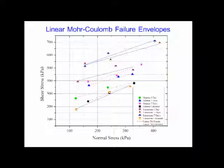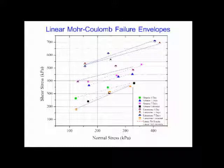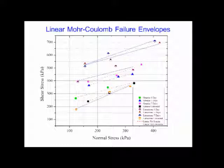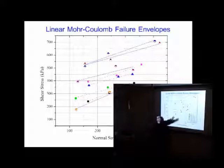Here are our results. The dashed lines are granite results and the straight lines are limestone results. In the unbound condition, we had higher shear strength for granite than limestone. But when we chemically bonded them with polyurethane, we had much higher strength for limestone than granite — just keep that in mind for now. The two lower lines are unbound, and the upper lines are the bound conditions.